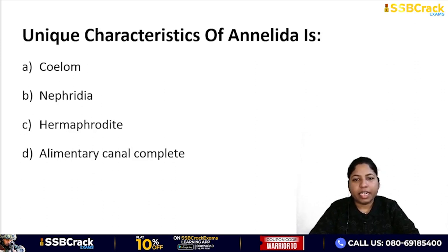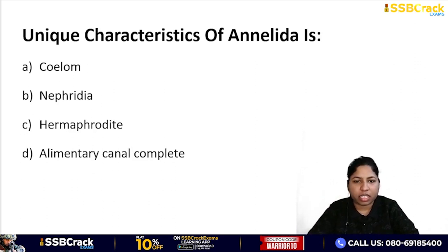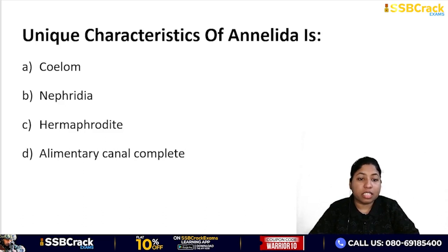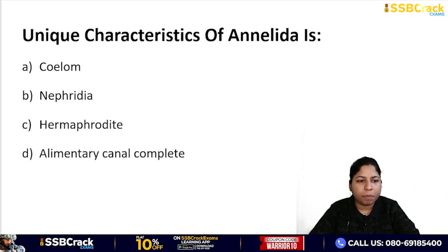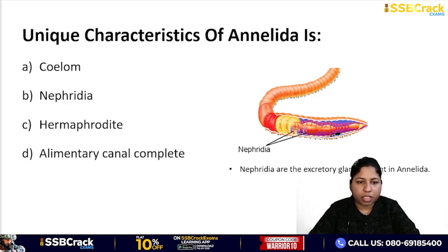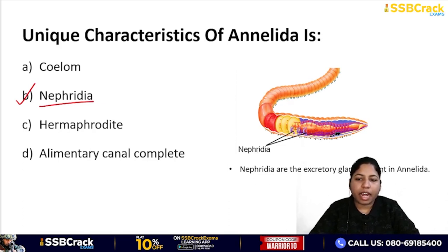Next question: what are the unique characteristics of Annelida? Options: coelome, nephridia, hermaphrodite, or complete alimentary canal. When you see a phylum name, at least one or two examples should immediately come to mind — for Annelida, think earthworm. The correct answer is nephridia. Nephridia are excretory glands present in Annelida.